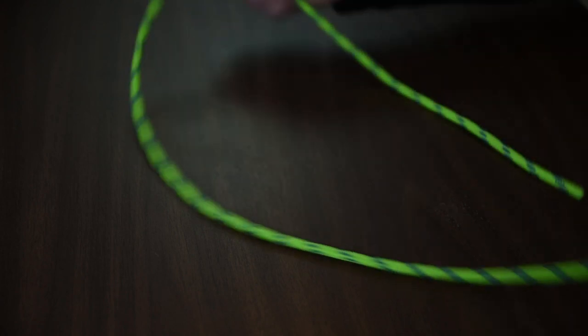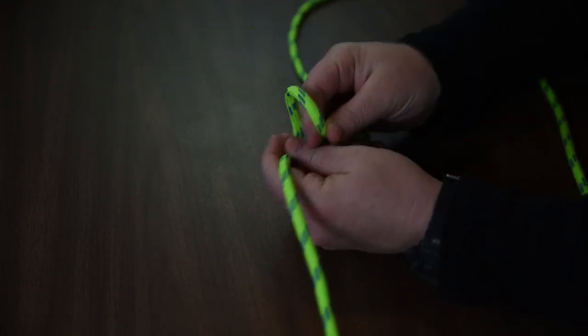So the French bowline has two loops. Let's look at how to tie that. We're going to take the rope, throw a loop, okay?